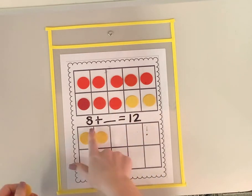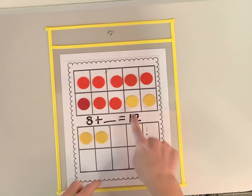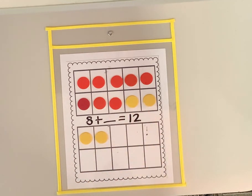The red counters represent the amount of paper I started with. And the yellow counters are the amount of paper that I added to my stack. When I added more, this is how many more I added. So to figure out my missing number, all I have to do is count my yellow counters.